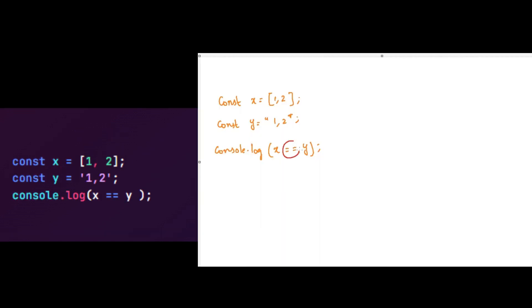Here we are using loose equality operator, so first we need to understand how this loose equality operator behaves in JavaScript. Whenever we use a loose equality operator between an array and a string, then JavaScript will try to convert this array into a string by using type coercion concept in JavaScript.